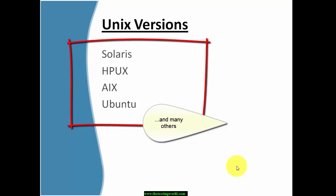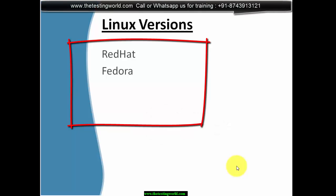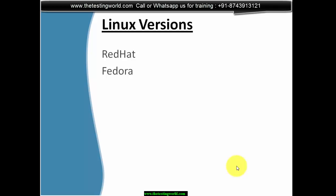What are the different versions of Unix? The versions available in the market are Solaris, HPUX, AIX, and Ubuntu. Similarly, we have different versions of Linux as well, such as Red Hat, Fedora, and many more versions available in the market.